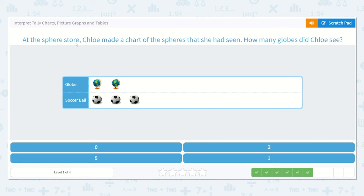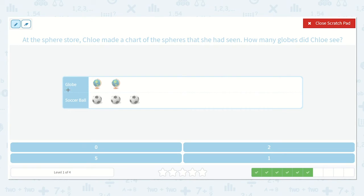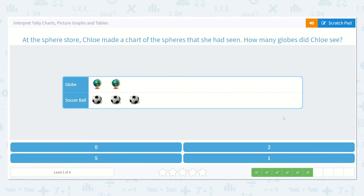At the sphere store, Chloe made a chart of the spheres that she had seen. How many globes did Chloe see? I see the word globe here, and when I follow it straight across, that's how many she saw. Down here says soccer ball, but we're not looking for how many soccer balls. We're looking for how many globes. So how many is that? Yes, two. One, two. Great. My answer is two.